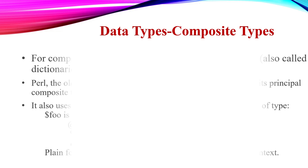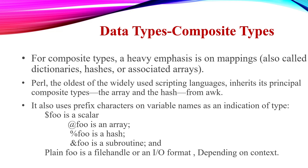Composite types include associated arrays, hashes, and dictionaries. Scripting languages have a heavy emphasis on mapping, also called dictionaries, hashes, or associative arrays. Perl inherits its principal composite types — array and hash — from awk. Perl also inherits variable name prefix characters that indicate the type.